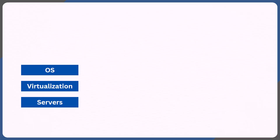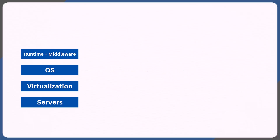I would install the operating system — like Windows, Linux, or anything of your choice. Now, I cannot just host my application right away on the operating system. I would need runtime and middleware, and that's where application server, web server, Tomcat, Docker, etc. come into picture, depending on the application you're hosting. If you're not familiar with any of these, just think of this layer as something that glues both the operating system and your application — it's sort of like a middleman between OS and your application.